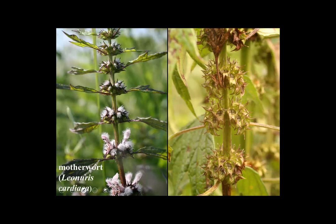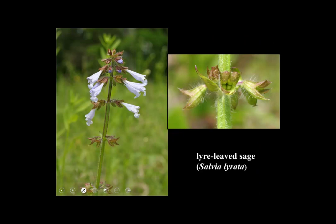Another feature that distinguishes the mint family, in addition to the square stems, opposite leaves, and bilabiate corolla, is the fruit. The ovary of the mint family is deeply two-lobed, and each lobe is further divided, so the ovary is ultimately four-lobed. When in fruit, the fruit consists of four little nutlets. Looking inside the calyx of this motherwort in fruit, each one of those four facets is a tiny nutlet — the characteristic fruit of the mint family. Other families may look very similar but have capsules instead of four nutlets.